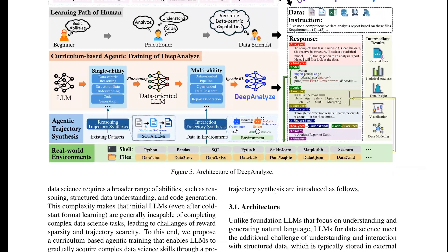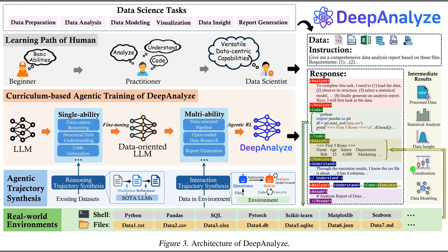Figure 3 presents the full architecture that turns a plain language request into an analyst-grade workflow. The model plans, inspects data, writes Python, executes it, and then answers. Action tokens are special markers that tell the model which mode to use next. The left side maps a human-like curriculum that grows single abilities into integrated skills. The right panel illustrates a live loop of analyze, understand, code, execute, and answer.